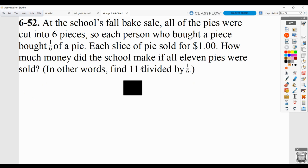You can either show 11 circles representing the pies, show that you divided them into 6, and how many pieces you would have. You could also do it by 11 divided by 1 sixth, where you do your keep, change, flip. So you keep 11 over 1, change your division sign to a multiplication sign, and flip, in other words, the reciprocal of the second fraction.